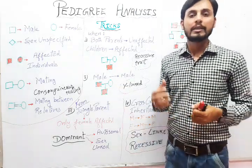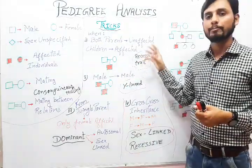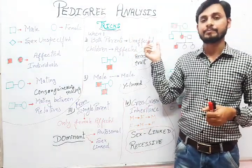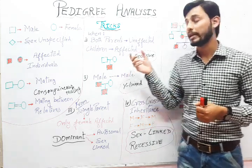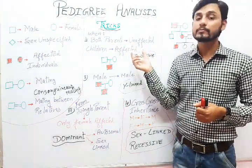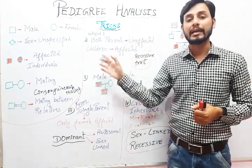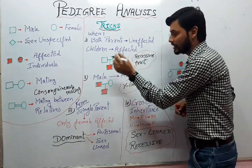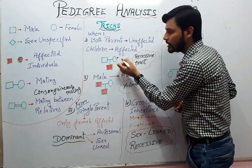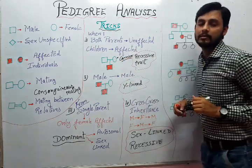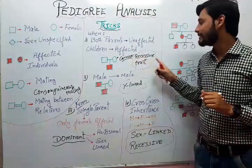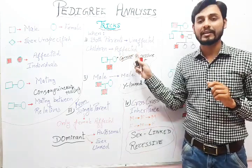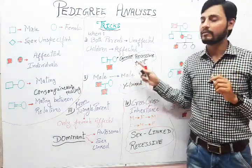Now the most important part: the tricks to understand pedigree analysis. The very first trick is — when both the parents are unaffected but the character is expressed in the children, then the mother will be the carrier for that character, and the trait will be recessive.